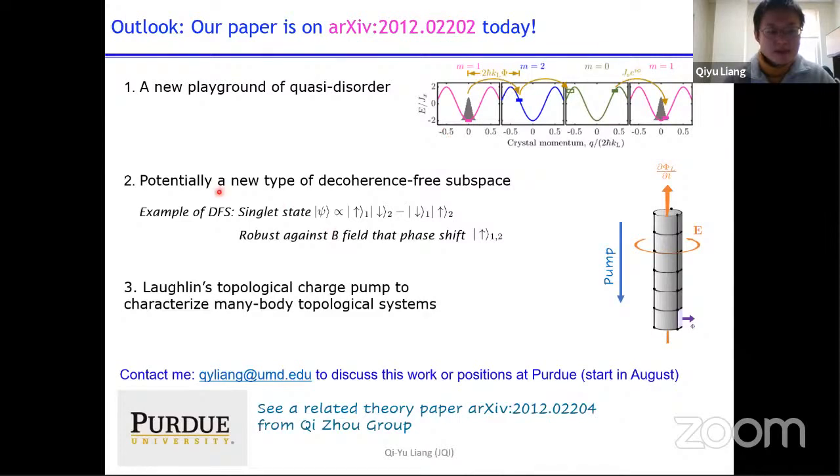And second, what we did can be potentially engineered to be a new type of decoherence-free subspace. It means that you have some protected space that are robust against certain noise. And this can be useful in quantum information processing or interferometric measurements. An example of experimentally demonstrated decoherence-free subspace is a singlet. This is robust against a magnetic field that shifts the relative phase between the two spins in the same way, right? If you put that phase shift in, then this singlet state is totally untouched.